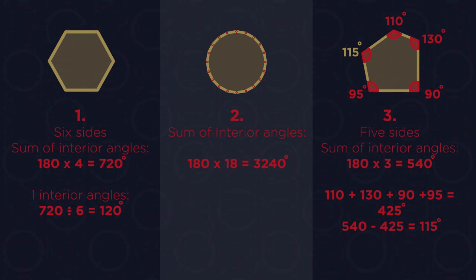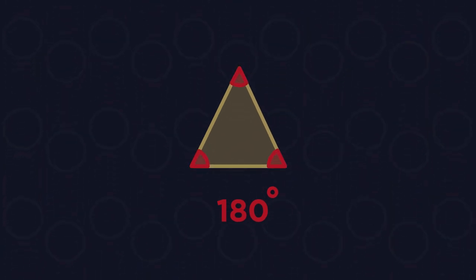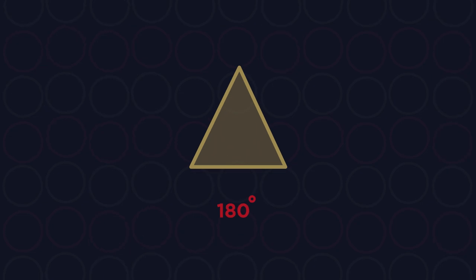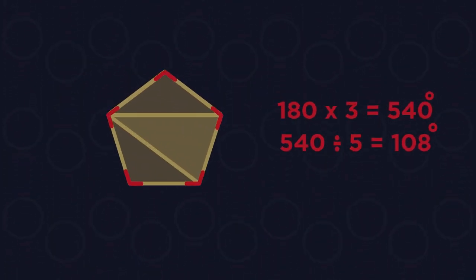So there we have the interior angles of polygons. You simply need to know that there are 180 degrees in a triangle. We then look to see how many triangles fit into the polygons. There's always two less triangles than there are numbers of sides.